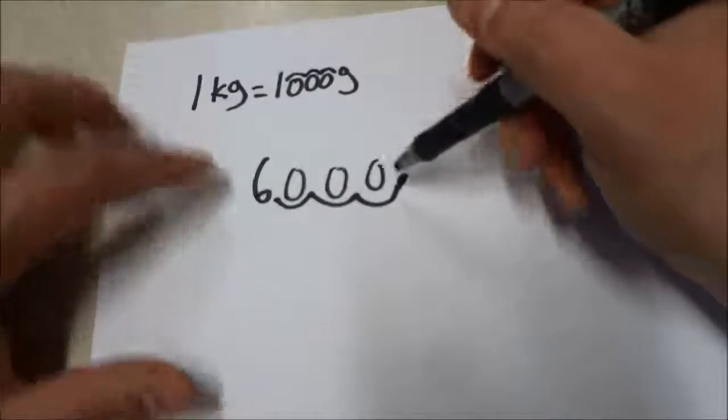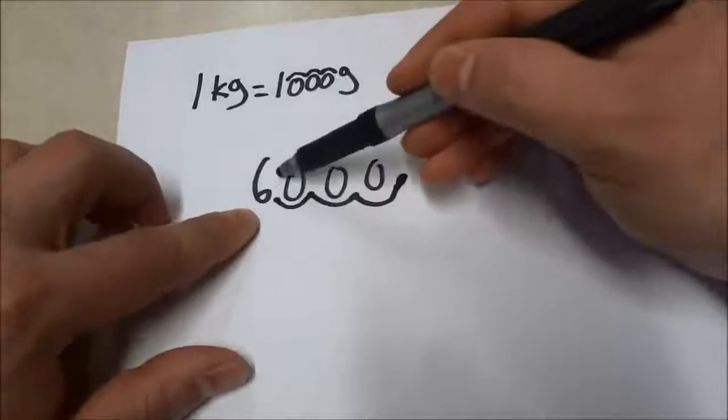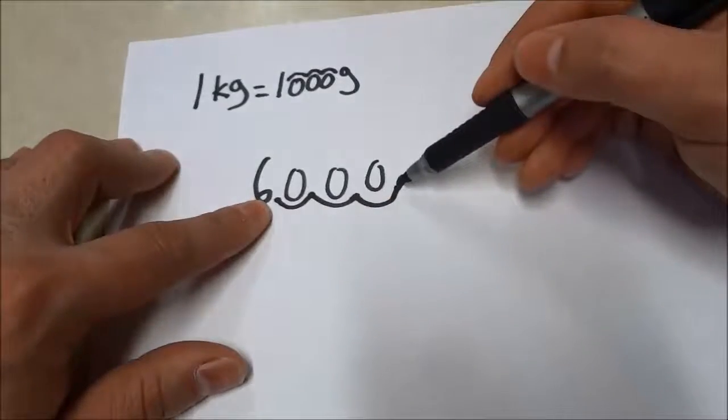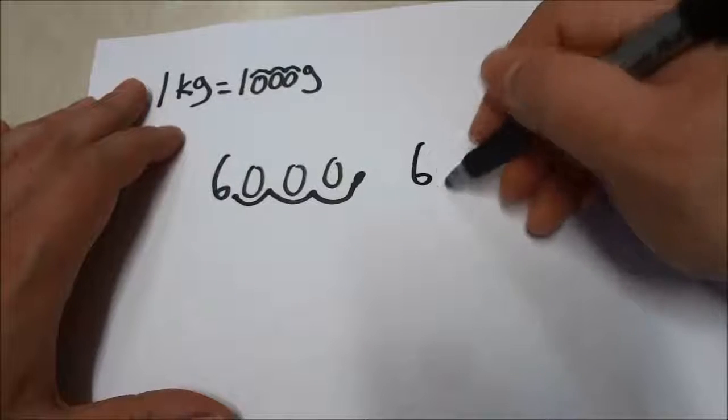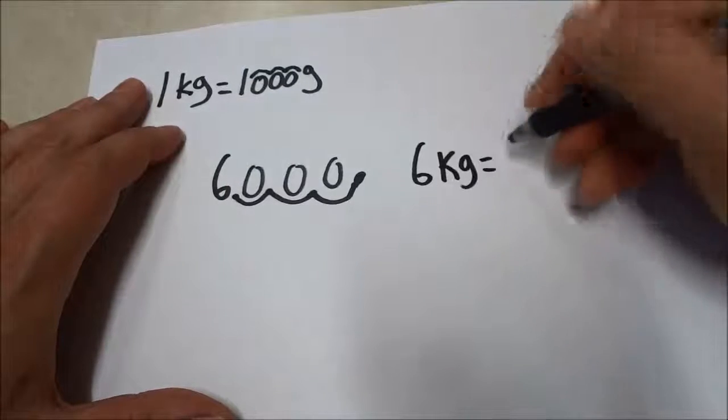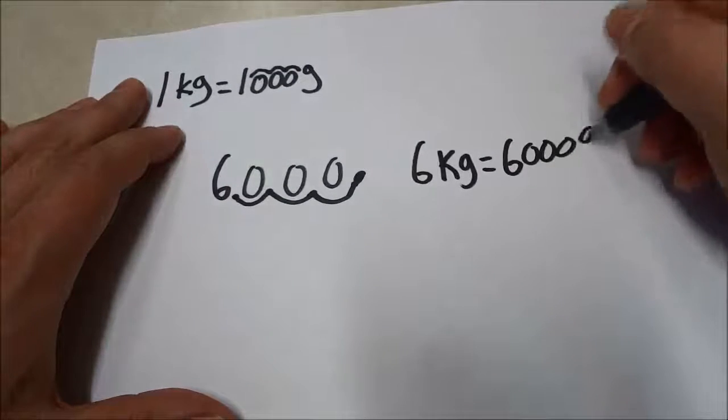So basically, 6 kilograms is equal to 6,000 grams. And I'll just write that over here. 6 kilograms is equal to 6,000 grams.